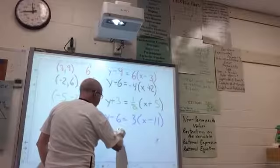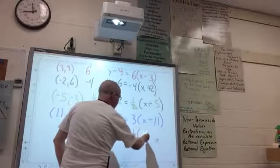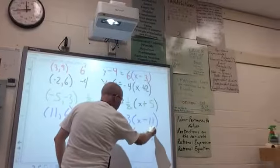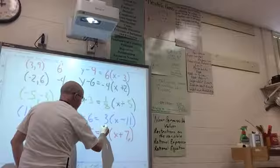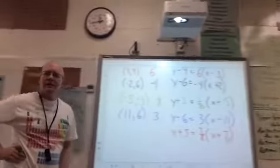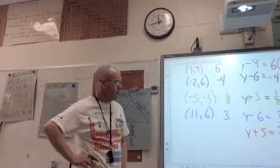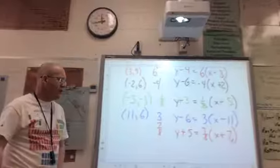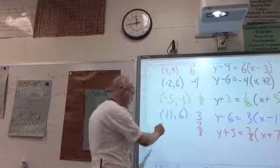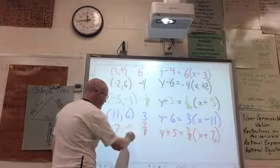Now one last one. Y plus five equals seven eighths X plus seven. All right. What's my slope? Seven eighths. What is my X coordinate? Minus seven. Minus seven. And my Y coordinate is minus five. Yes.